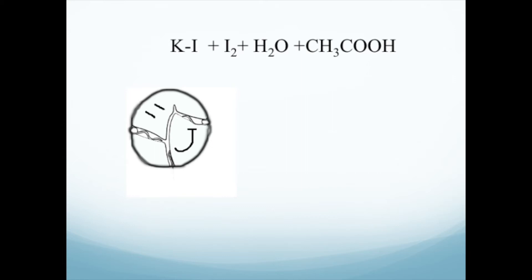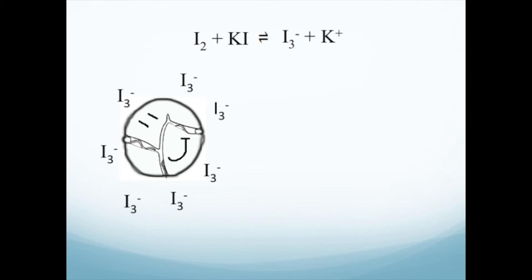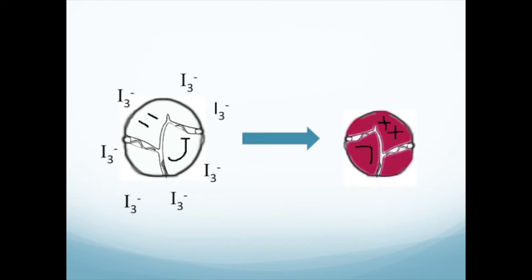Here we have a short schematic of how the preservative affects the phytoplankton of interest. This happy-go-lucky dinoflagellate is enjoying its life of sunbathing until we add our Lugol solution. Since iodine by itself is not very soluble in water, we add potassium iodide to create triiodide, which is quite soluble and creates the brown color. When this triiodide enters the cell of the phytoplankton, it kills it and makes the cell turn very dark, making it easy for the analyst to spot it when counting.